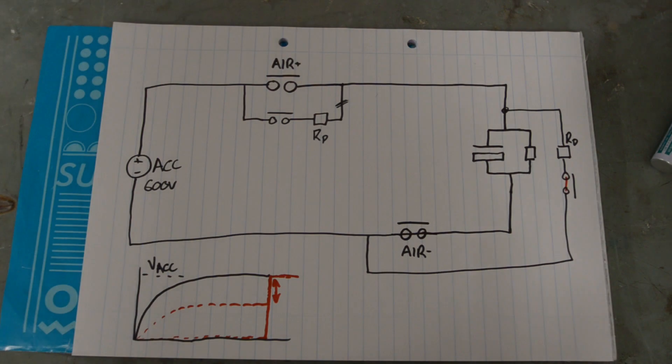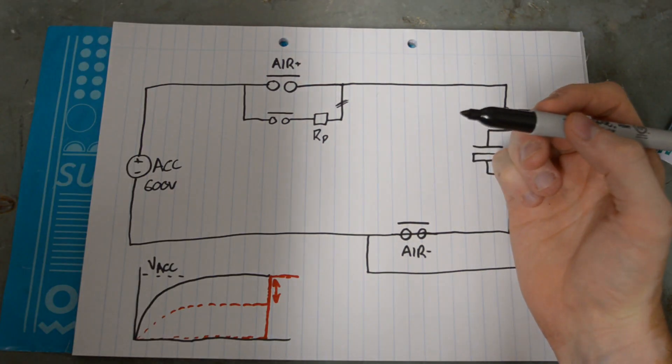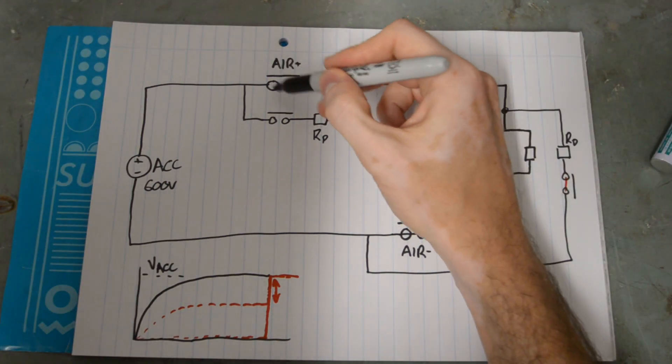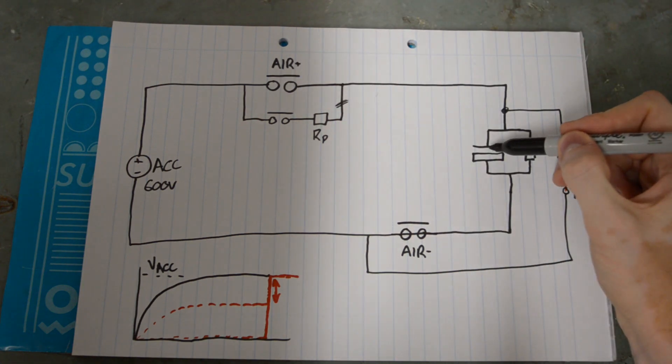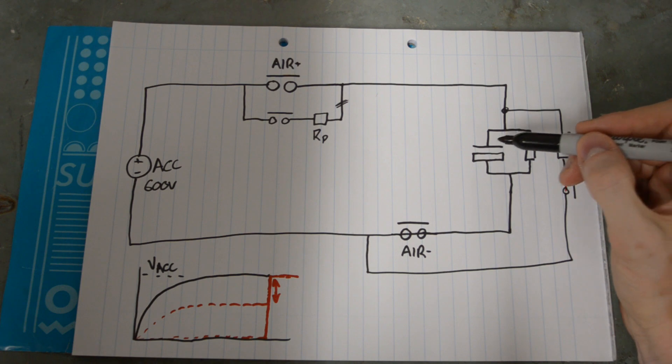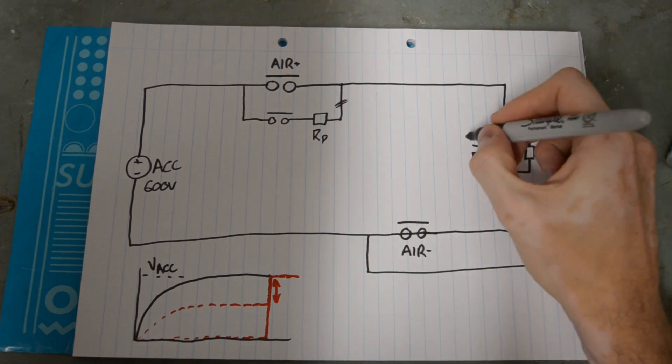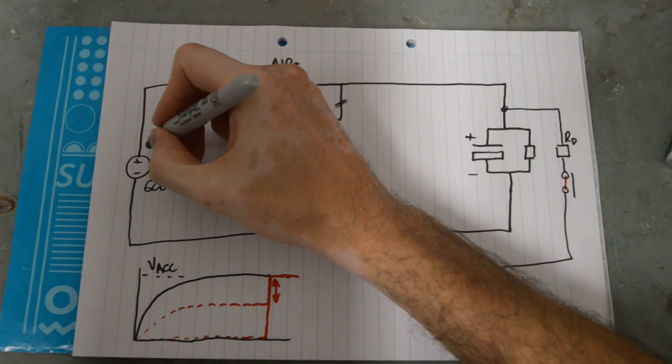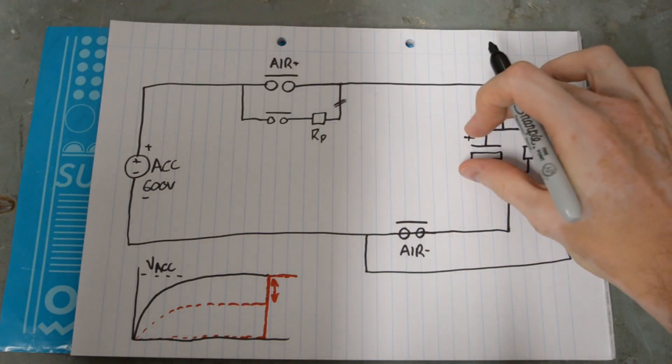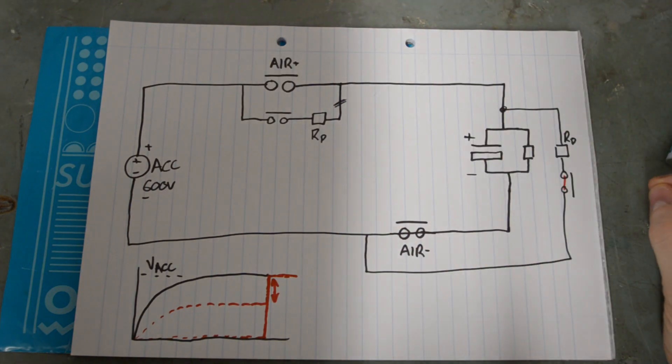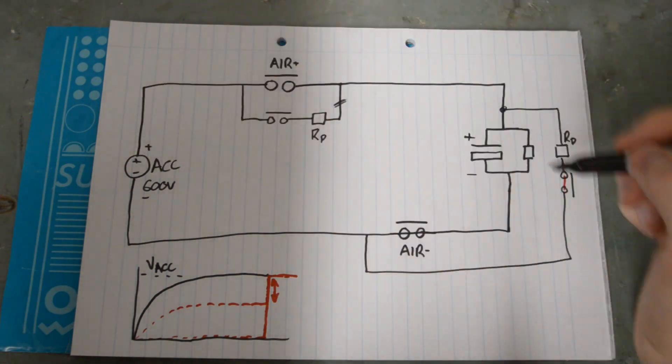Alright, so what are we going to do about this? We can put into place some kind of control system that would only close the air when the pre-charge is actually complete. So what's the condition for the pre-charge being complete? Well, if the voltage here across this capacitor is very close to the voltage of the accumulator. We need some way to compare these voltages to make sure we actually get to, say, 90-95% of the accumulator voltage.